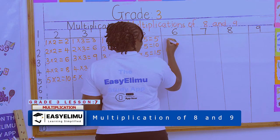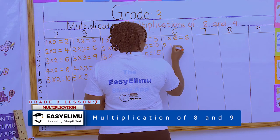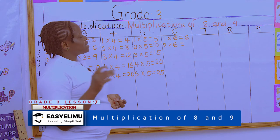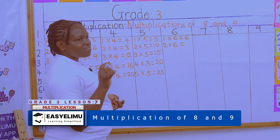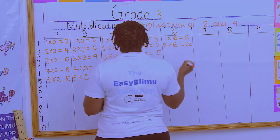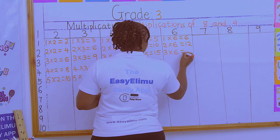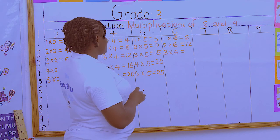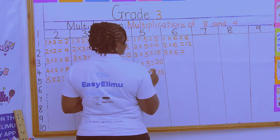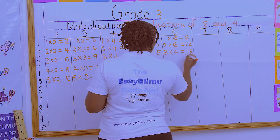Any number times 1 is that number. 2 × 6 is 6 + 6 = 12. 3 × 6 is 12 + 6 = 18. 4 × 6 is 18 + 6 = 24.